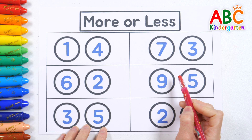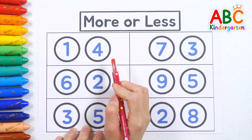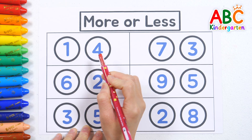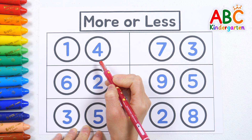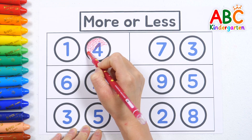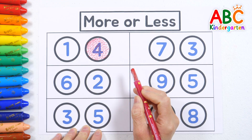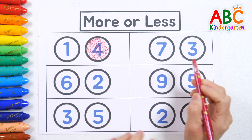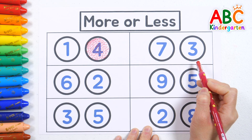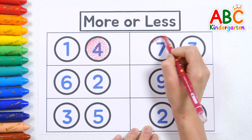Let's find out which number is bigger or smaller! Between one and four, which number is bigger? The answer is four! Now between seven and three, which is bigger? The answer is seven!